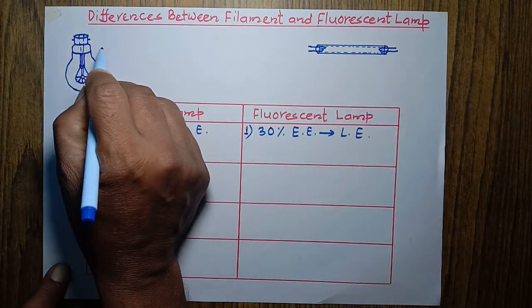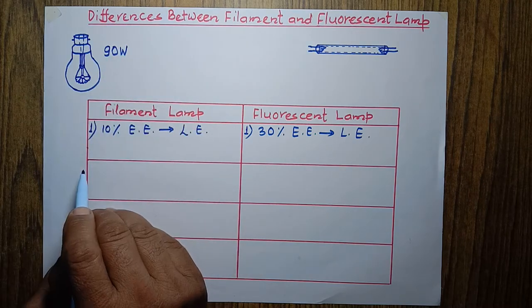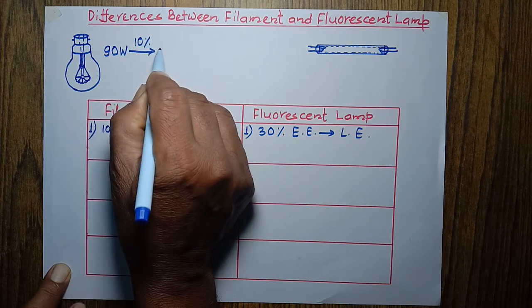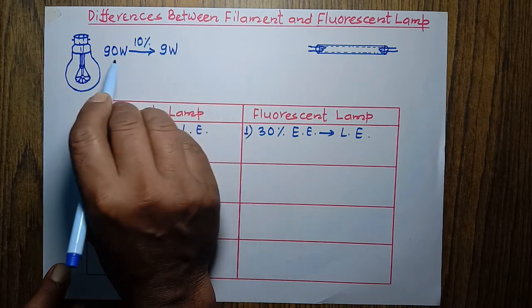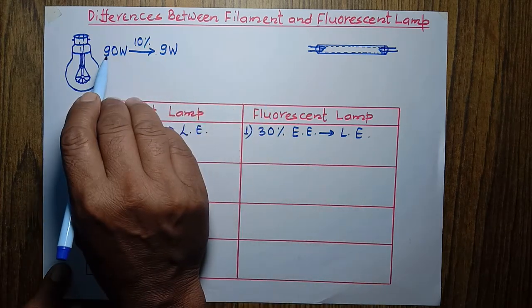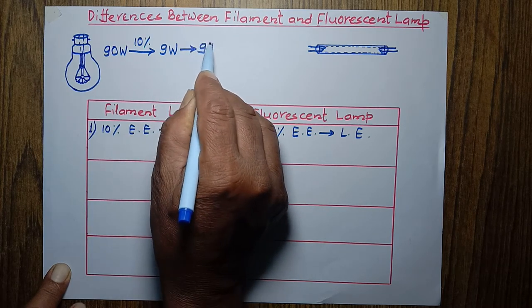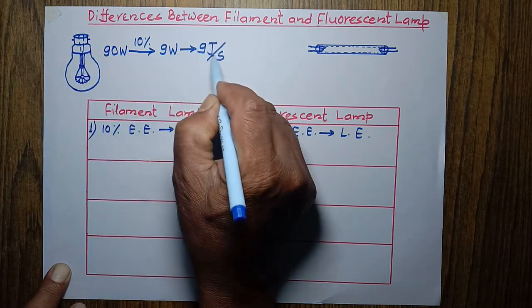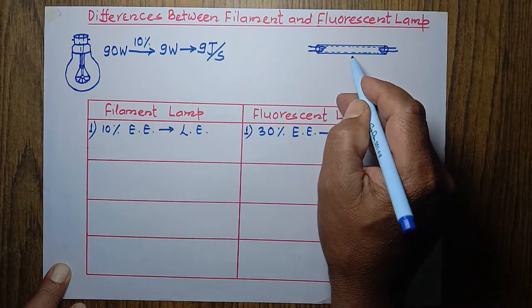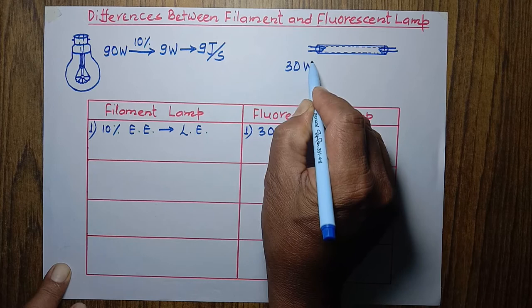For example, if we take a 90-watt filament lamp, then 10% of 90 watts is 9 watts. So it converts 9 joules of electrical energy per second into light energy. Now in the case of the fluorescent lamp, let's take a 30-watt fluorescent lamp.